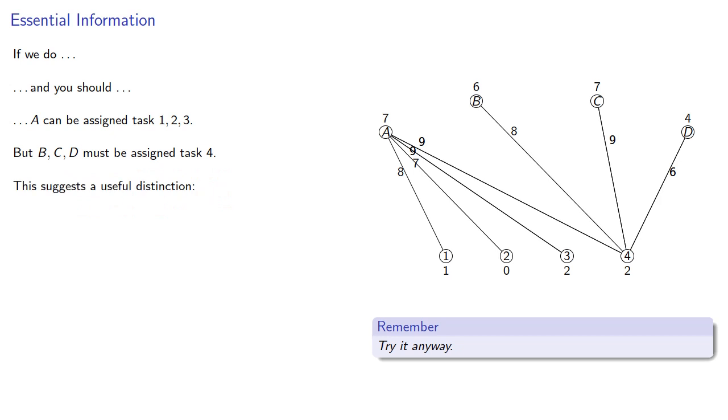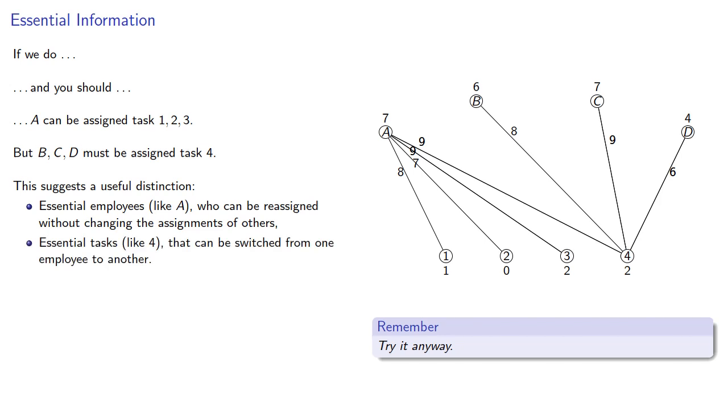And this suggests a useful distinction. Essential employees, like A, who can be reassigned without changing the assignments of others. And essential tasks, like 4, that can be switched from one employee to another.